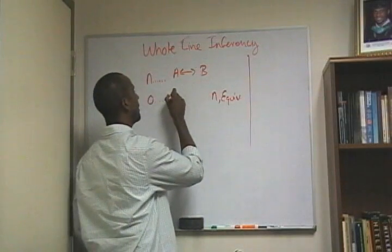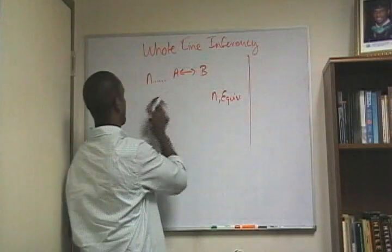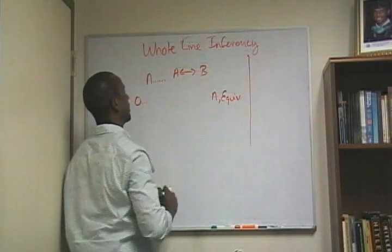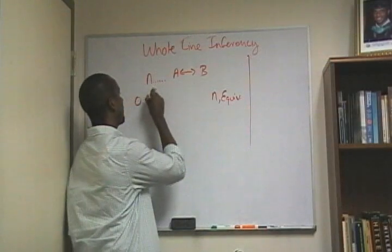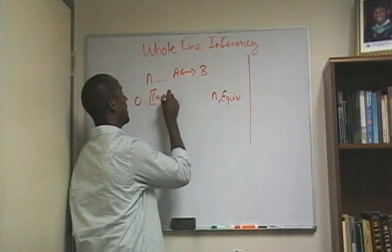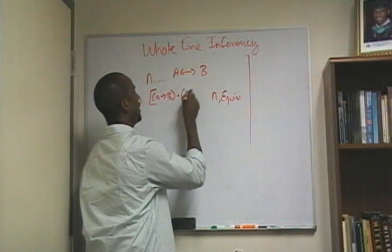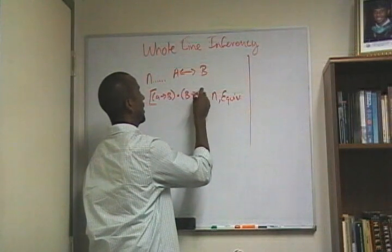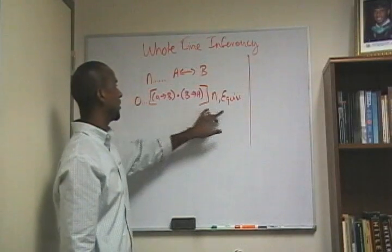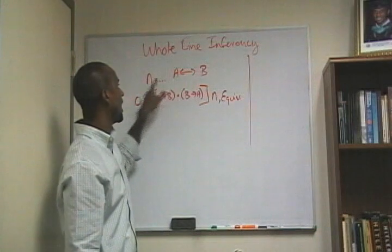So now I have the following: if A, then B, and if B, then A. My justification is that I've applied equivalence to line N.